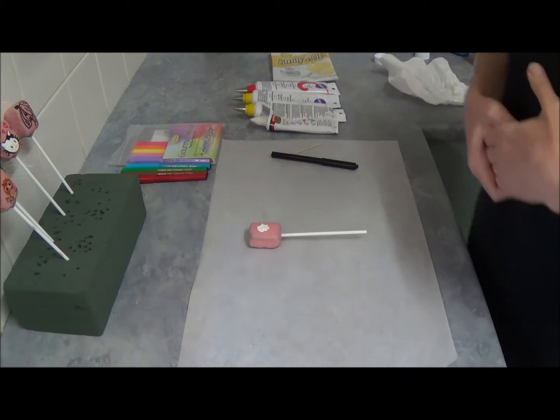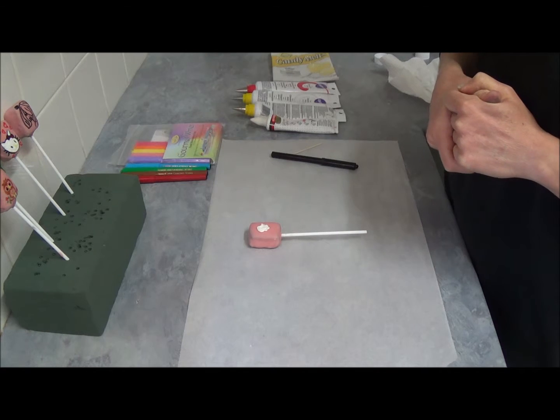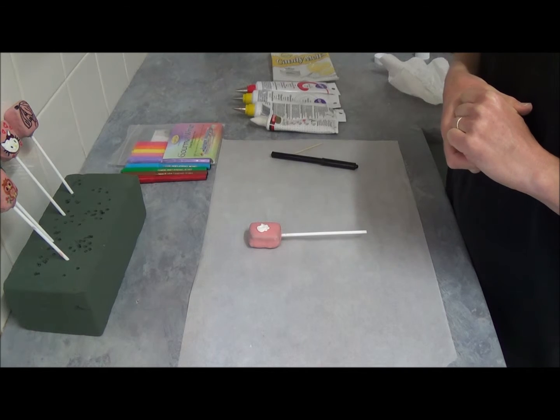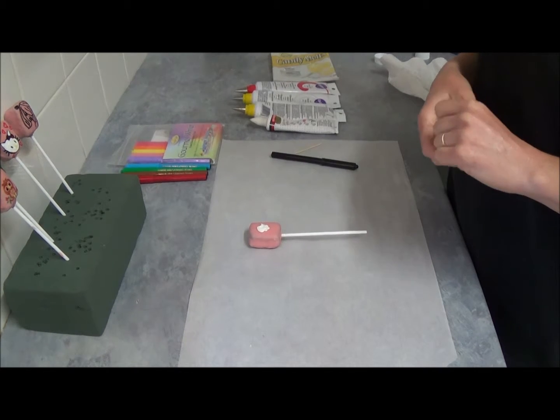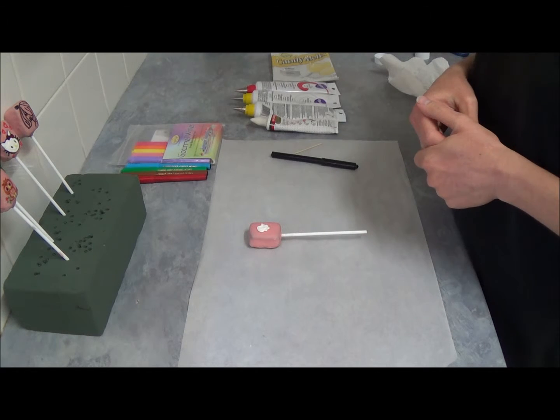This is part 3 of our decorating dark chocolate cake pops. This is a girl's iPod and mobile phone covers. So what we do is we are using different kinds of candy melts.